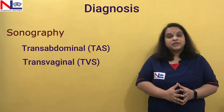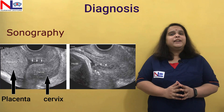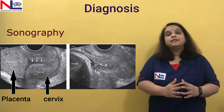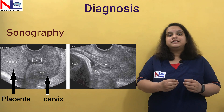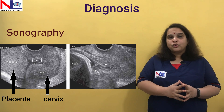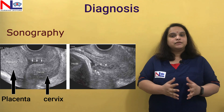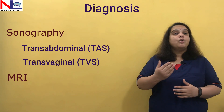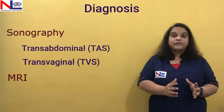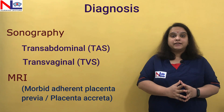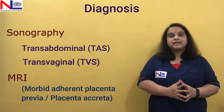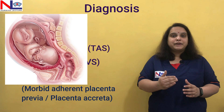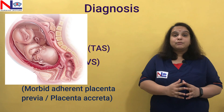We can go with transvaginal sonography because it is quite accurate compared to the transabdominal approach. Transvaginal sonography is the safest, most accurate, and best method of choice to identify placenta previa and its various degrees. We can also go with MRI, which is more accurate when the woman has morbid adherent placenta — placenta accreta — because it gives a clearer picture.